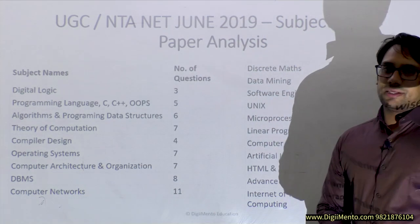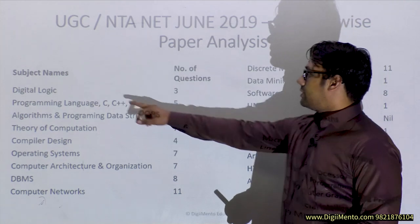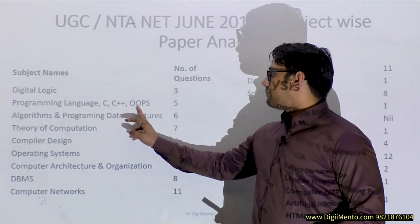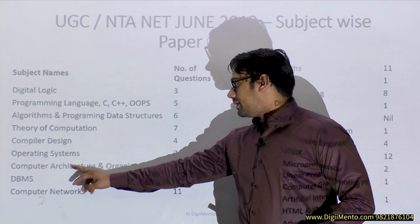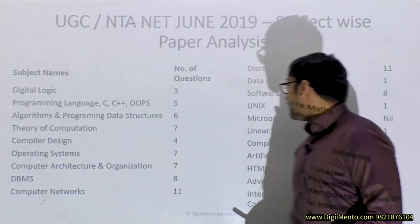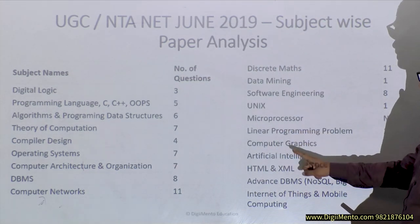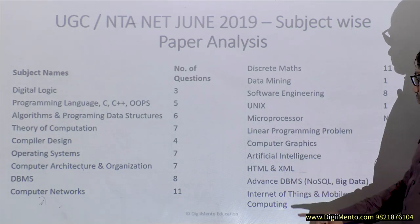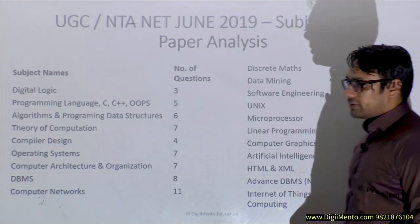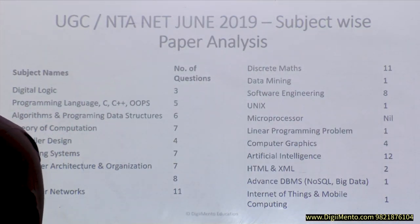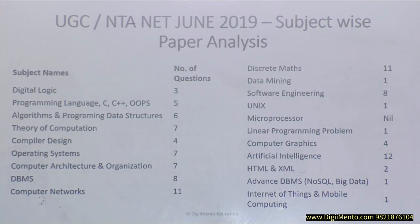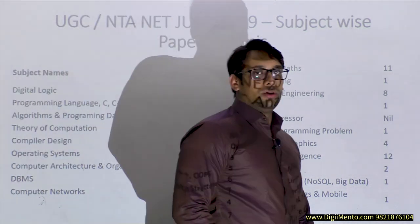In the UG CSNET examination, there are a total of 23 subjects. You can count them individually — for example, you have mobile computing, data communication, computer networks. But roughly there are 23 big or important subjects.